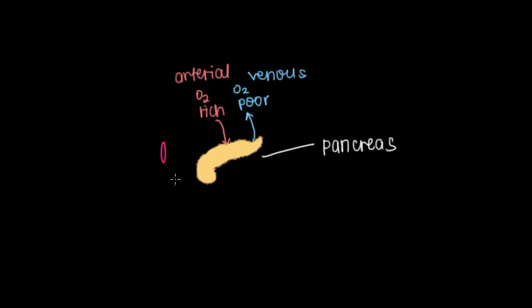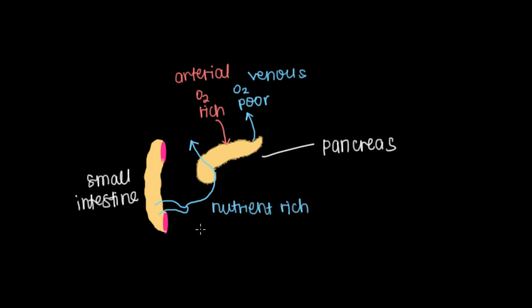But in addition to these two things, the pancreas also receives blood flow from the intestine, which I can draw right here. The small intestine will deliver unique nutrient-rich blood through the pancreas. And this is nutrient-rich blood through the portal venous system. This is the portal venous blood flow. And once this nutrient-rich blood flows through the pancreas, it will trigger hormone release.